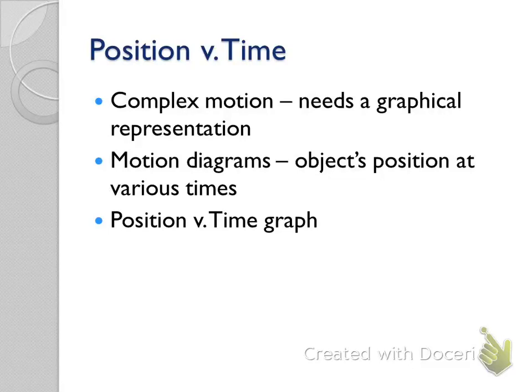On a position versus time graph, we're going to represent what we consider complex motion, which means we're doing multiple things within a certain time interval. We might be moving forward, moving backward, or standing still. That's how we can represent more than one type of motion in the same time interval. Complex motion means we're not just moving forward and not just moving backward.